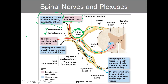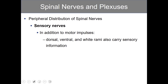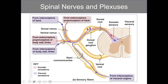The ventral ramus covers the sides and the limbs. Since all spinal nerves are mixed, we also have to consider the sensory portion. In addition to motor impulses, all peripheral nerves carry sensory information. The dorsal ramus covers interoceptors and exteroceptors of the back, while the ventral ramus covers the body wall and the limbs.